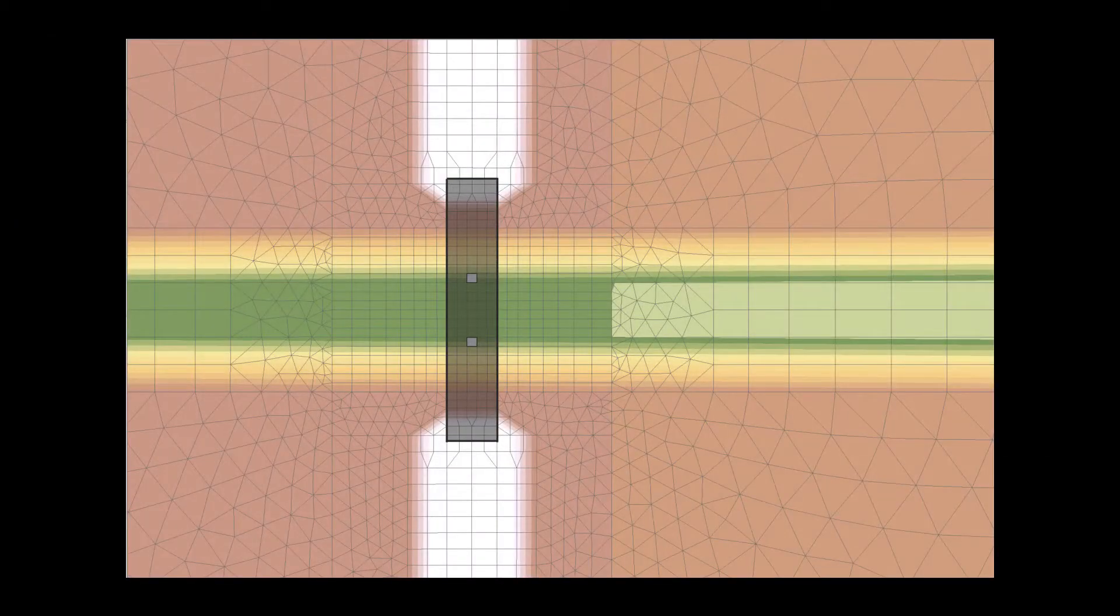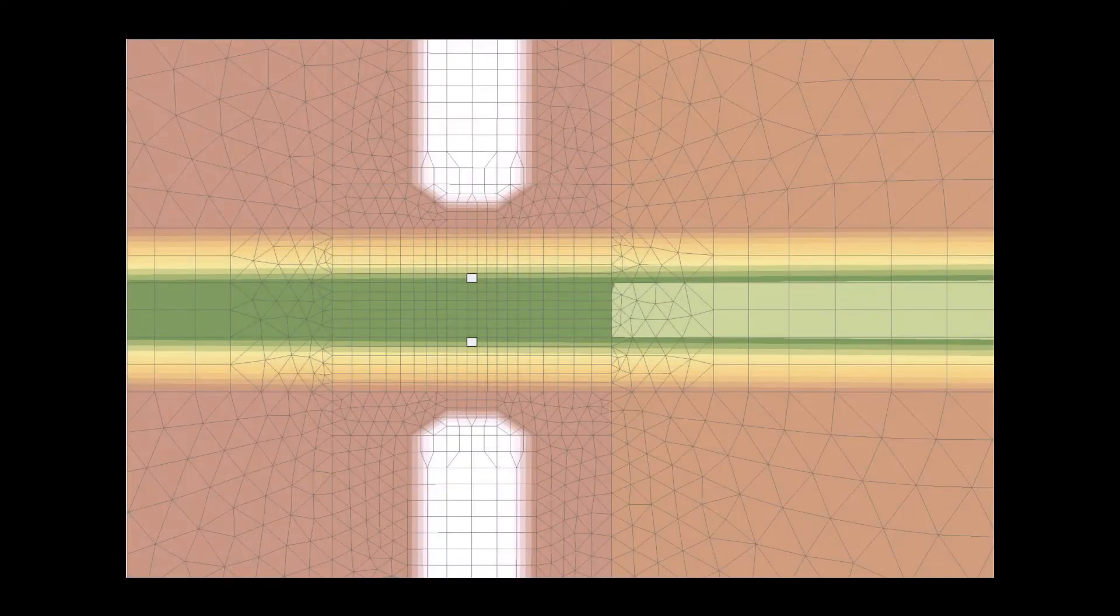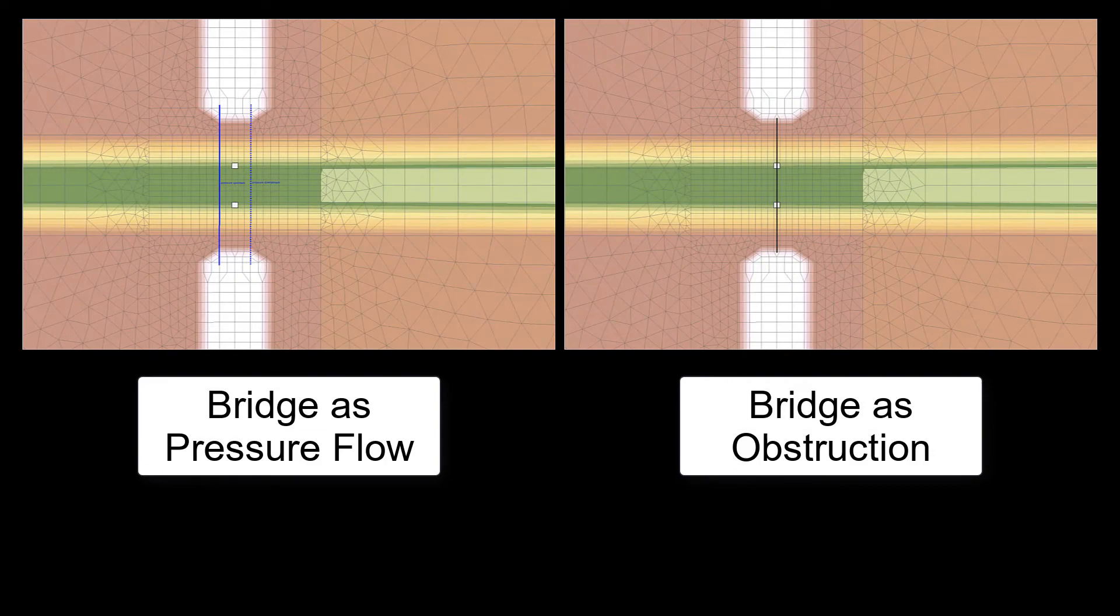The bridge deck should be represented in the model if the water level reaches the elevation of the low chord. Since the mesh is used to represent the terrain, the bridge deck must be represented in the model in another way. In SRH, bridge decks can be represented two different ways.